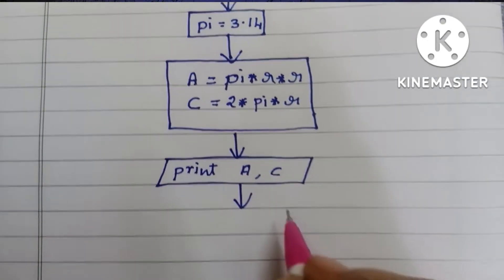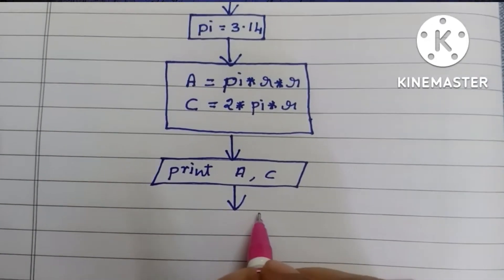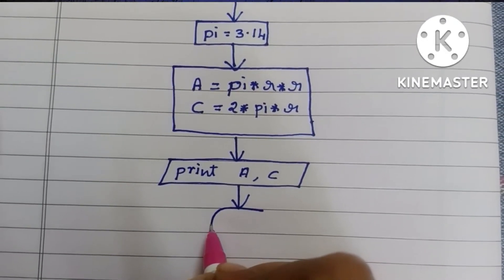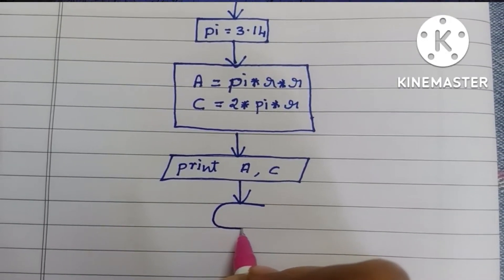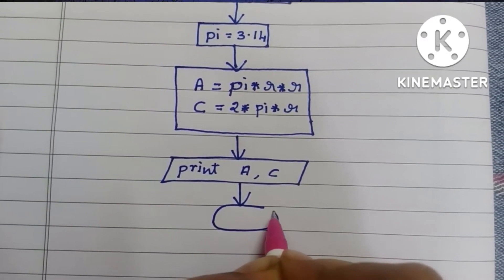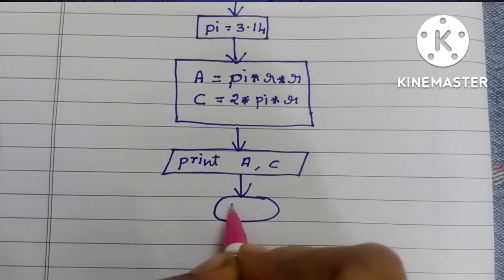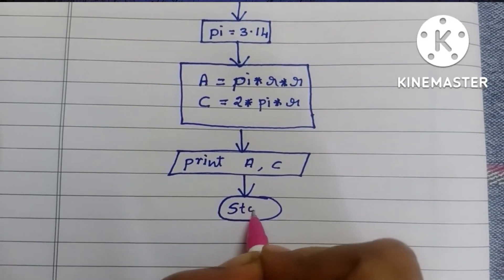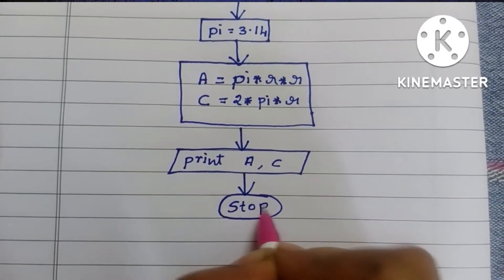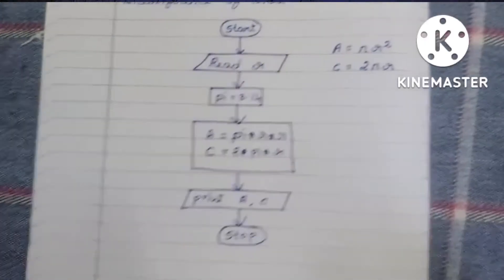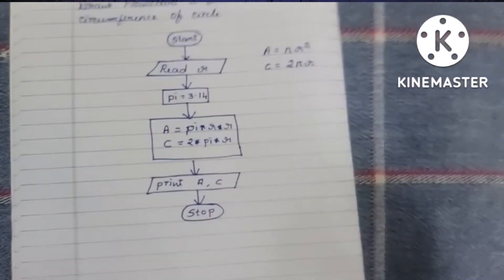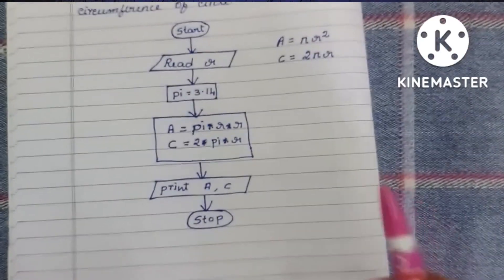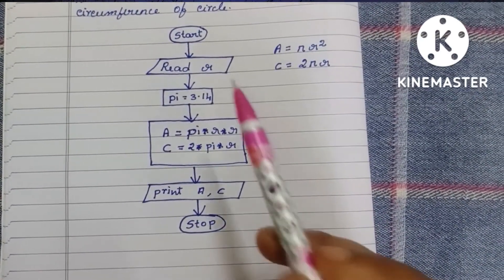Next we have to stop the flowchart using a stop statement, written within an oval shape. This is the complete flowchart to find the area and circumference of a circle.